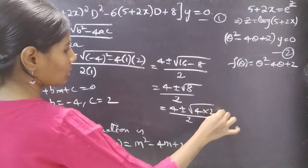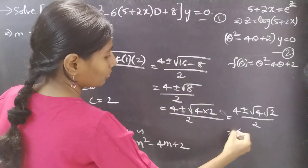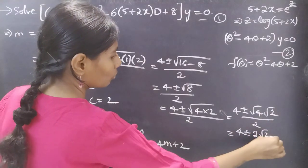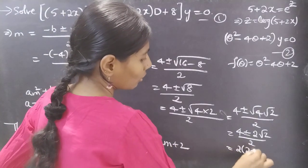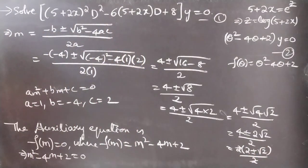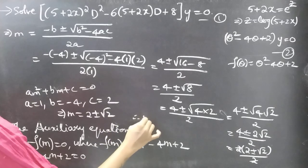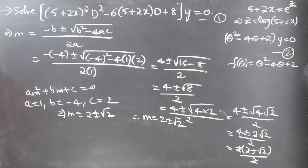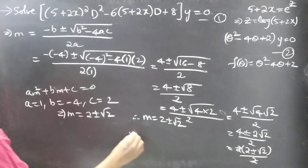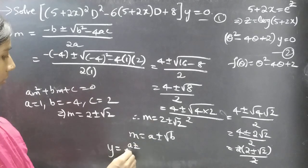This equals (4 ± √4·√2) / 2 = (4 ± 2√2) / 2. Taking 2 common from the numerator: 2(2 ± √2) / 2, where 2 cancels, giving m = 2 ± √2. So the roots of the auxiliary equation are m = 2 + √2 and m = 2 − √2, which are of the form m = a ± √b, where a = 2 and b = 2.